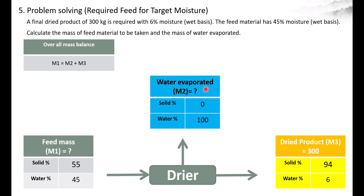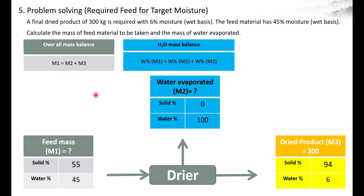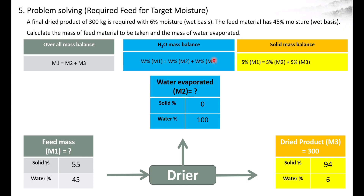The first is the overall mass balance equation: input equals output. Here there is only one input and two outputs, so the two outputs are summed. M1 is equal to M2 plus M3. For the water balance equation, we multiply each stream with its respective water percentage, so water percentage × M1 equals water percentage × M2 plus water percentage × M3.